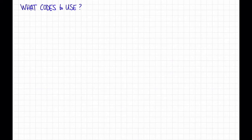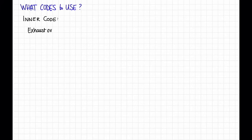For the inner code, we're just going to exhaust over all linear codes of the appropriate rate. This worked before for worst-case errors because of the Gilbert-Varshamov bound. We need to prove an analogous statement for the random error model. Here's a fun exercise: show that a random linear code achieves capacity on the binary symmetric channel.